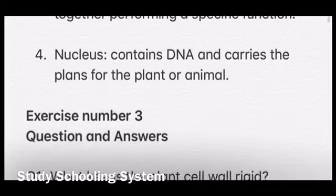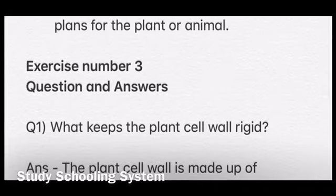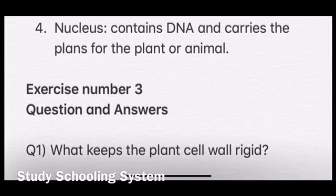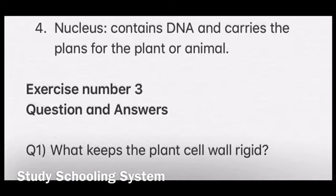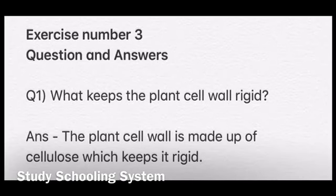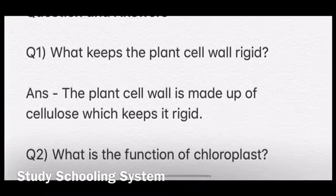Then you will write exercise number three, question and answers. Your first question is: what makes up the plant cell? The plant cell has a cell wall and a cell membrane. The question is asking what the plant cell wall is made up of that makes it rigid. The answer is: the plant cell wall is made up of cellulose, which keeps it rigid.